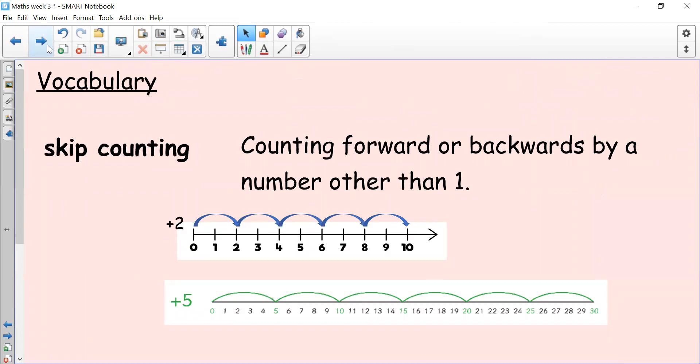So our vocabulary today, skip counting. We talked about skip counting when we were counting in twos last week. It just means counting forwards or backwards by a number other than one. So today we're skip counting in fives, counting forwards and backwards in fives.